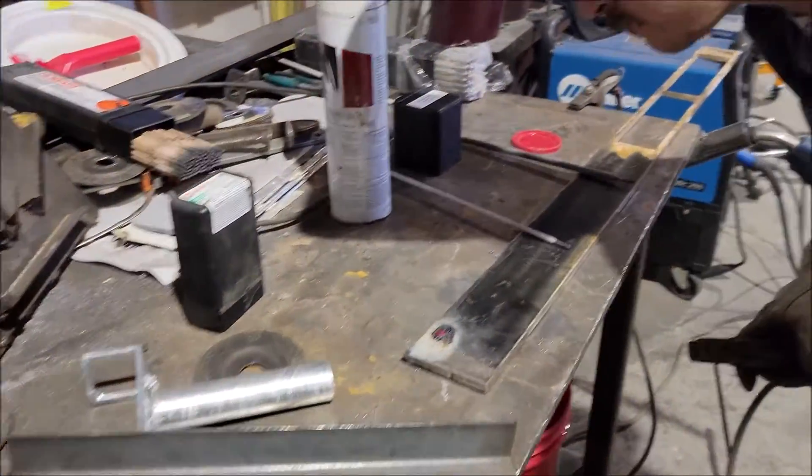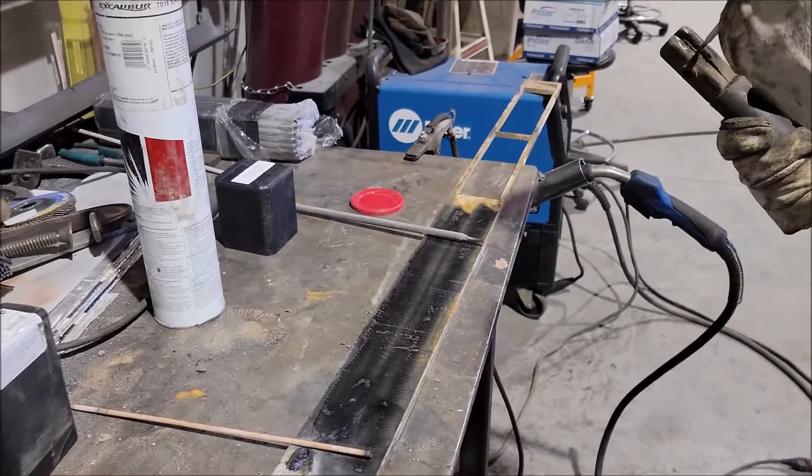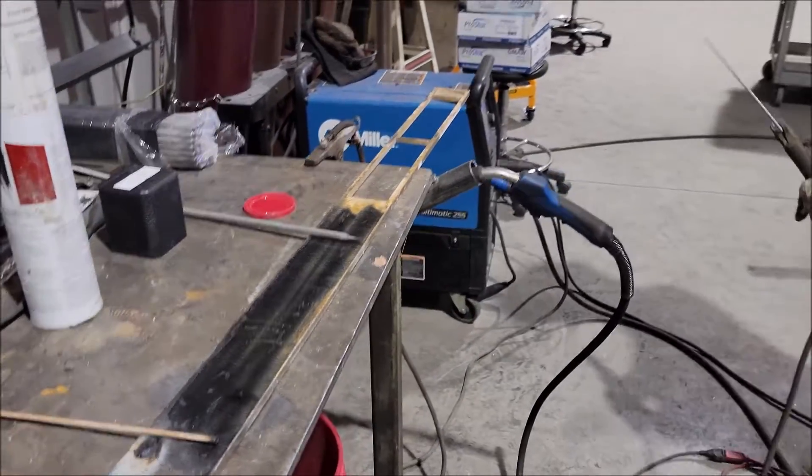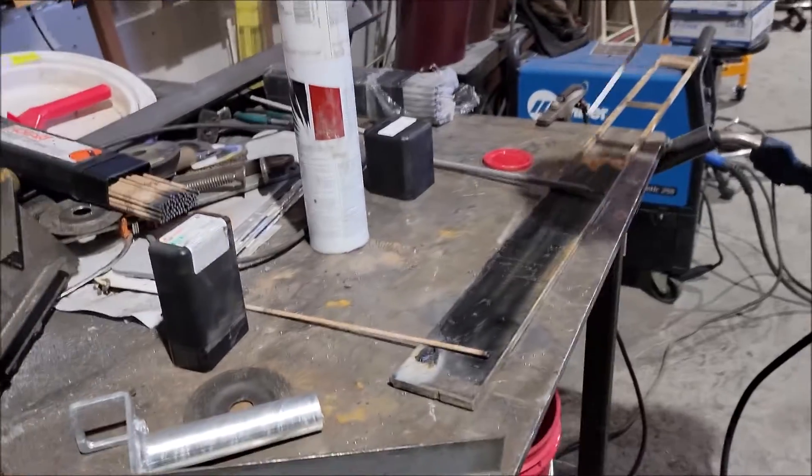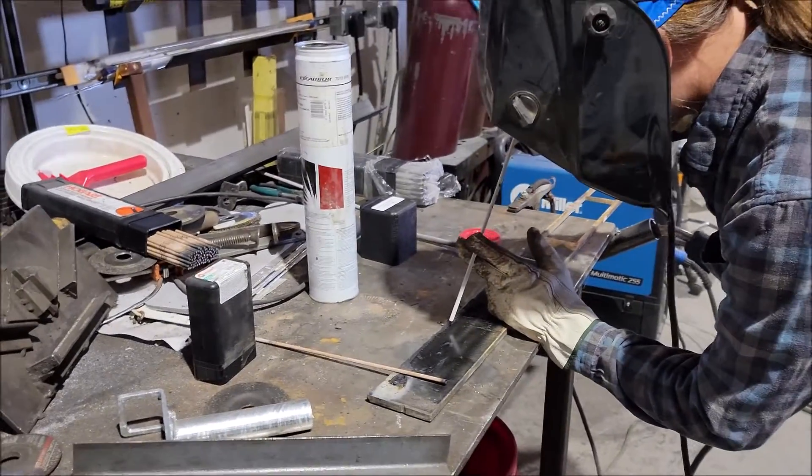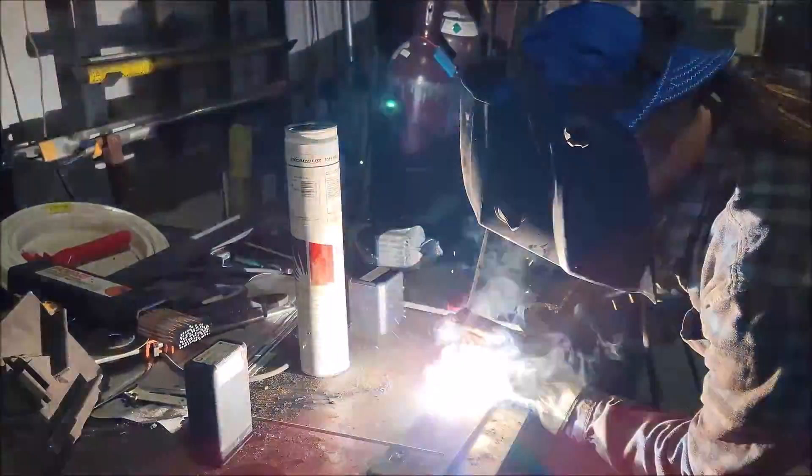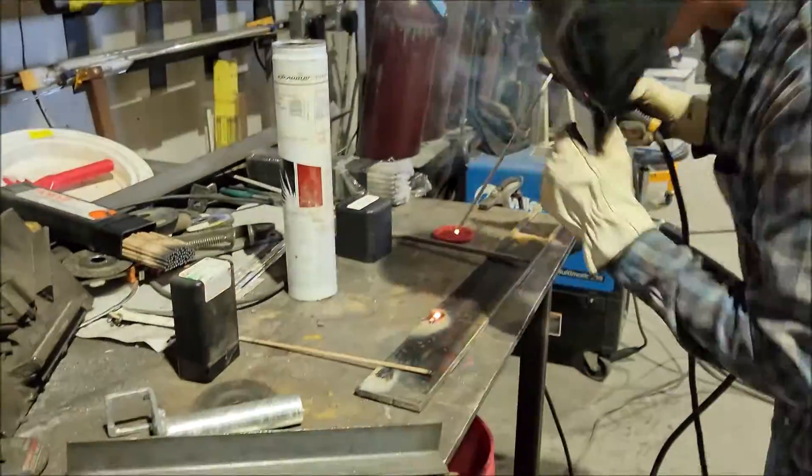So what's this next rod you got? Next one is a 7018. 7018 used in a lot of steel fabrication shops. It's a good rod for filling. What kind of settings are you using? 130 amps. So this is also a very common mild steel rod.